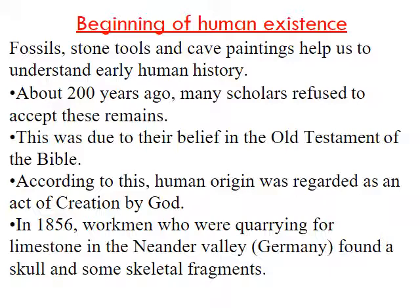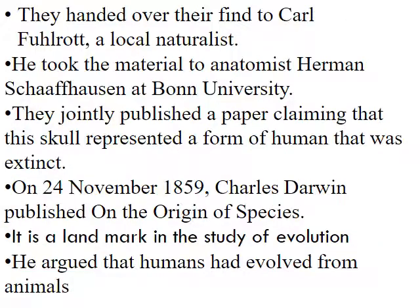In 1856, workmen quarrying for limestone in the Neander Valley found a skull and some skeleton fragments. They handed their find to a local naturalist who took the material to Herman at Bonn University. They jointly published a paper claiming that the skull represented an extinct form of human. On 24th November 1859, Charles Darwin published 'On the Origin of Species,' a landmark in the history of evolution.